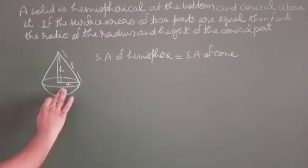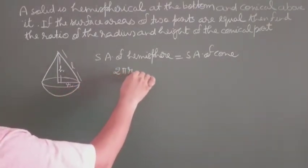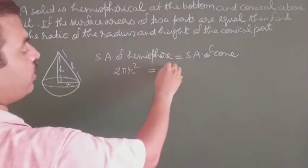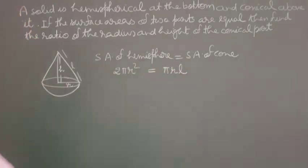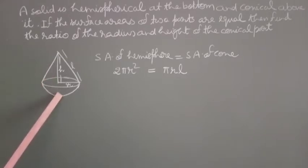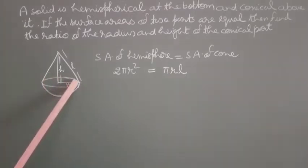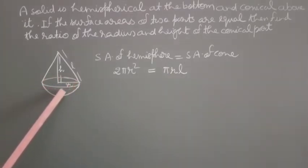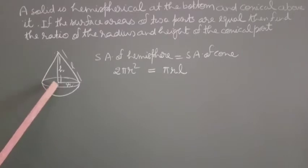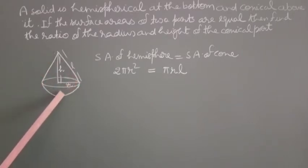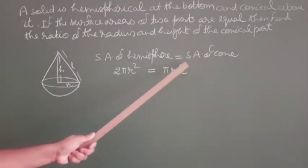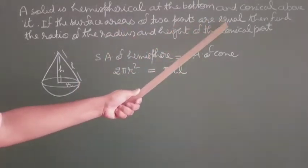Surface area of hemisphere is 2πr², and curved surface area of cone is πrl. Because these two are joined together, the base is not included. So we take the curved surface area of the hemisphere and the curved surface area of the cone. Both are equal because this is given to us.